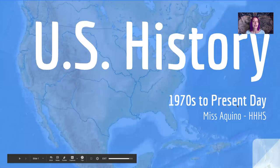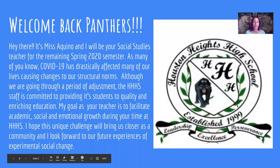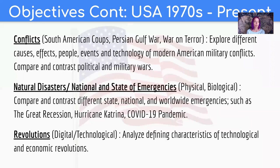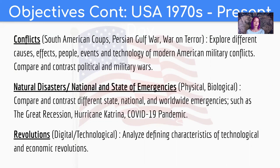We will be discussing American history from the 1970s all the way through 2020. This includes topics such as the Cold War and how it ends, the progression of the Civil Rights Movement, presidents from Nixon to Trump, conflicts including the War on Terror, natural disasters and emergencies, and we will conclude with the Digital Revolution.